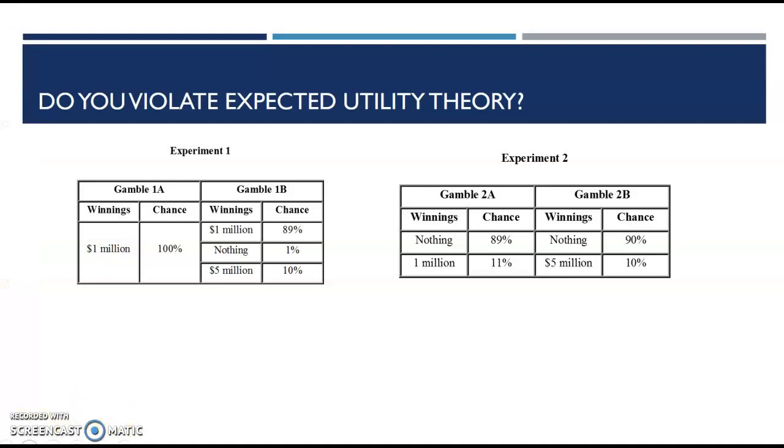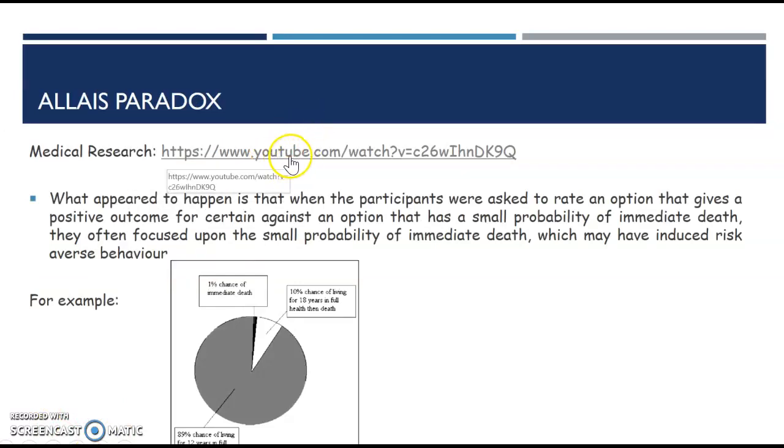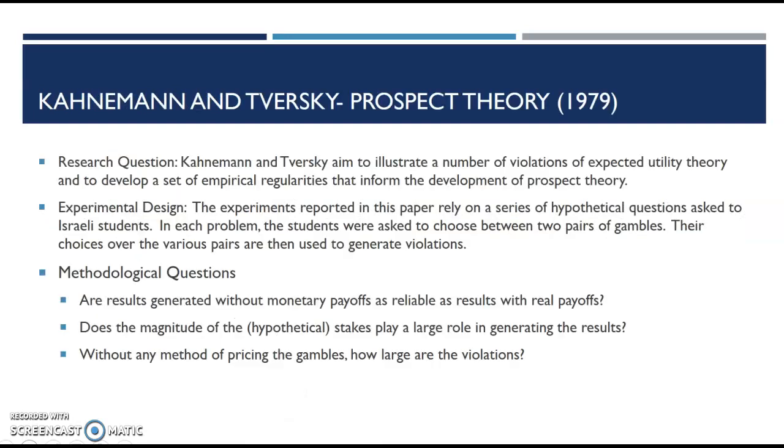I have a video here that you can watch about medical research that discusses this. But what appears to happen is that when participants are asked to rate an option that gives a positive outcome for certain against an option that gives a small probability of loss, they often focus more on that small probability of loss. When we're talking about medical research, they have to make it super dramatic, so they talk about immediate death. And then people tend to focus more on the immediate death idea, even though that has a really, really low chance of actually occurring.